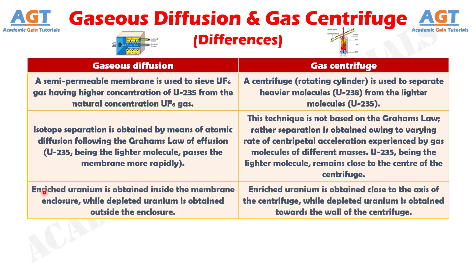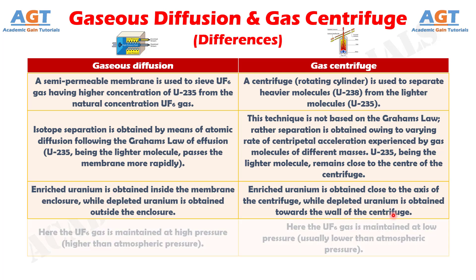Difference number 3. In the gaseous diffusion process, enriched uranium is obtained inside the membrane enclosure, while depleted uranium is obtained outside the enclosure. In the gas centrifuge process, enriched uranium is obtained close to the axis of the centrifuge, while depleted uranium is obtained towards the wall of the centrifuge.